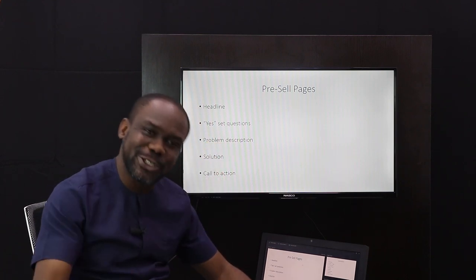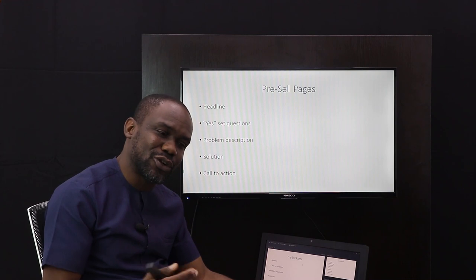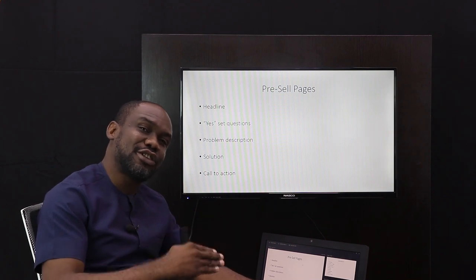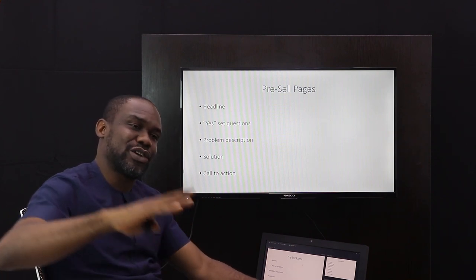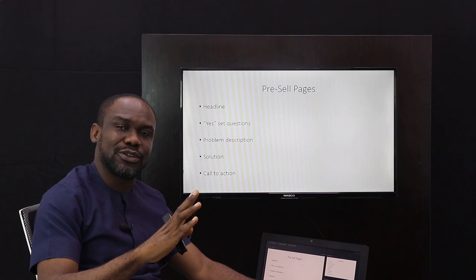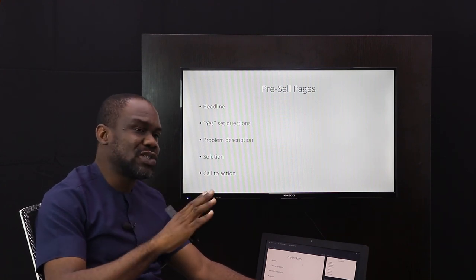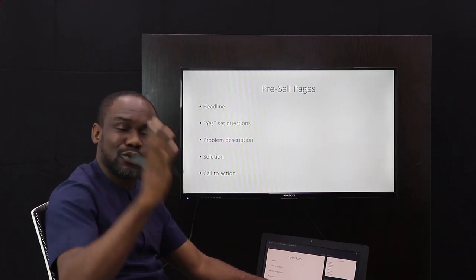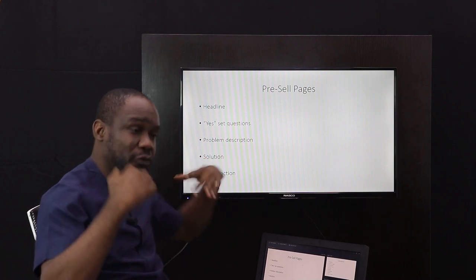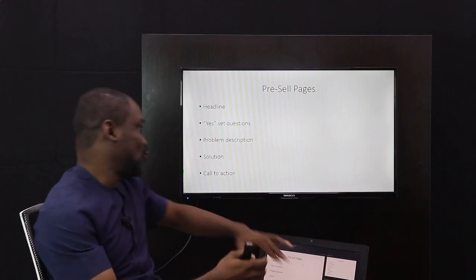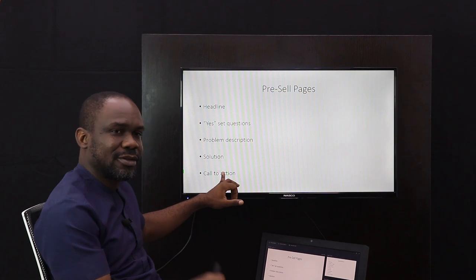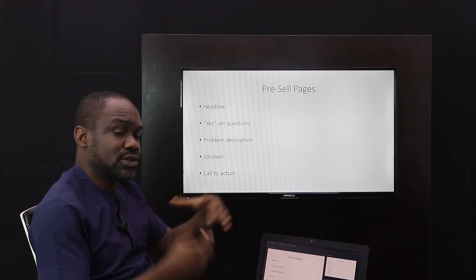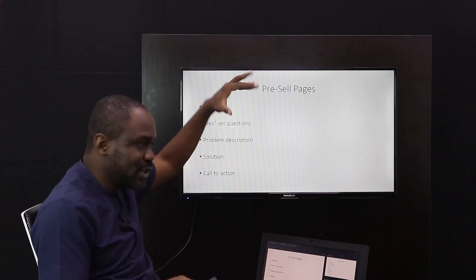And then you describe the solution: 'There is a solution, and that solution is this pair of unisex shoes that I have found that can help add three to five inches to your height without any surgery, without any expensive procedures. And the shoes are so cheap, you will love them the moment you get your hands on them.' Then you end with the call to action: 'If you would like to learn more about these shoes, click here to go to my link' — or if you want them to call, 'Call 000-0000 now.' That's how you put together your pre-sale page.